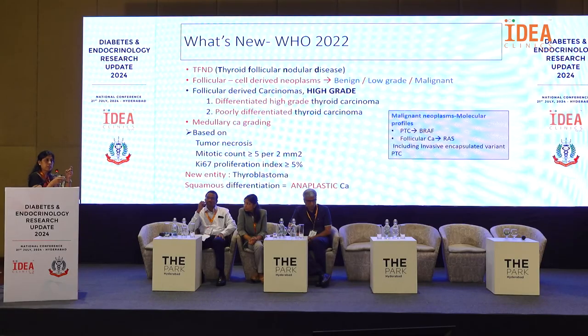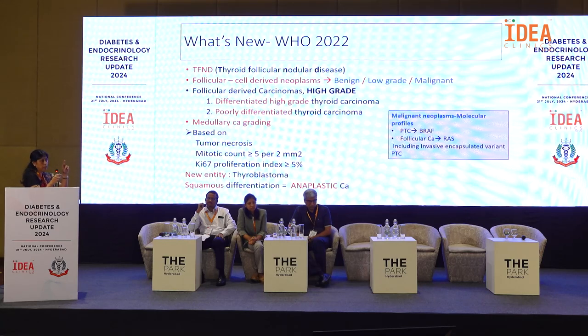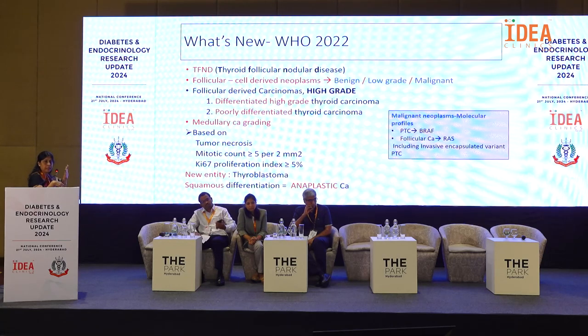Another major change is in the high-grade group. Follicular-derived carcinomas can now be of two types: the traditional poorly differentiated carcinoma, and a new differentiated high-grade thyroid carcinoma. There are also new criteria for grading medullary carcinoma based on necrosis, mitosis, and Ki-67, where IHC is required to make grading more reproducible. A new entity, thyroblastoma, is seen in DICER mutation-associated lesions predominantly in children.